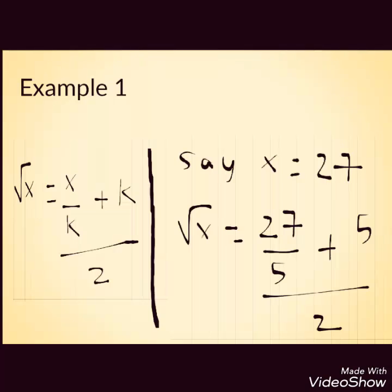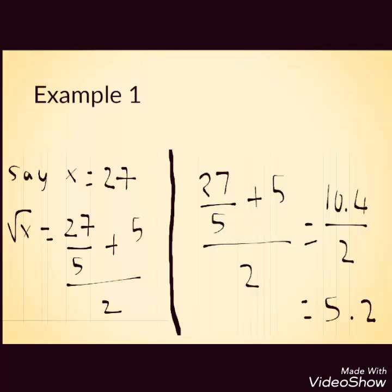So here the formula is x by k plus k whole divided by 2. Here x is 27, k is 5. Substituting it to the formula I get 27 by 5 plus 5 whole divided by 2. 27 by 5 is 5.4 plus 5, 10.4 divided by 2 which is equal to 5.2. So square root of 27 is 5.2.